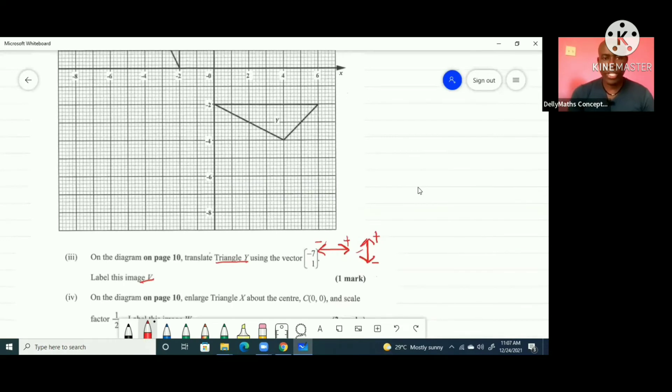We're going to move this point: 1, 2, 3, 4, 5, 6, 7, and then up. So that point landed there. This one, we're going to move 1, 2, 3, 4, 5, 6, 7, and then move up, landed there.